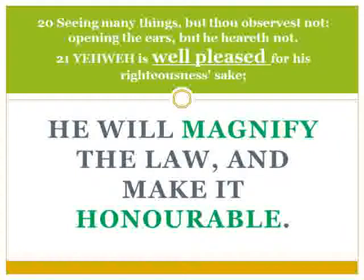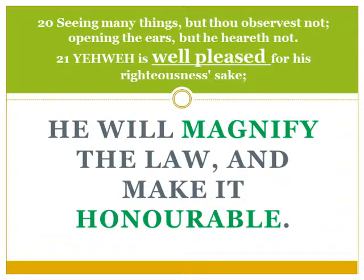What did Isaiah prophesy about this in regards to Yeshua? In chapter 42: 'Seeing many things, but thou observest not. Opening the ears, but he heareth not. Yahweh is well pleased for his righteousness. He will magnify the law and make it honorable.' Isaiah is talking about one of Elohim's servants that would be sent to make the law honorable and to magnify it. This is what Yeshua did. He came the first time to magnify the law, and he will return and restore all truth and render the law perfect.